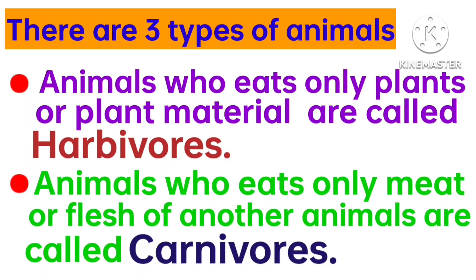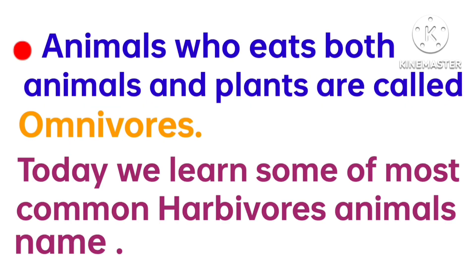There are three types of animals. Animals who eat only plants or plant material are called herbivores. Animals who eat only meat or flesh or other animals are called carnivores. And animals who eat both animals and plants are called omnivores.